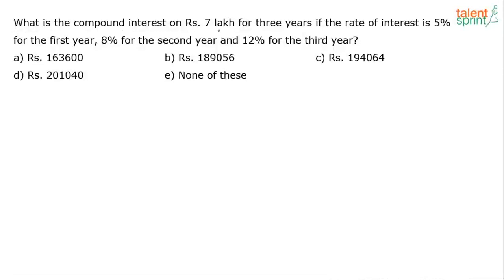What is the compound interest on rupees 7 lakh for 3 years if the rate of interest is 5% for the first year, 8% for the second year and 12% for the third year? So he's asking us to find out the compound interest on rupees 7 lakh for 3 years. If the rate of interest is 5% for first year, 8% for second year and 12% for third year.